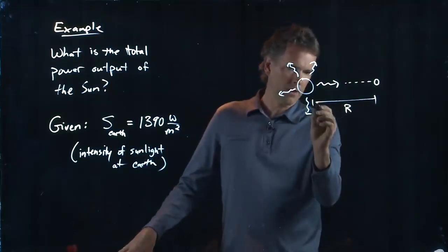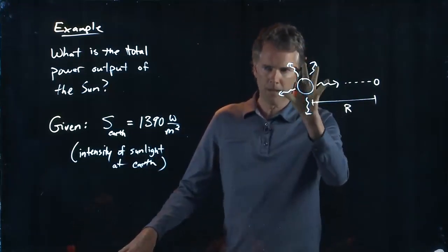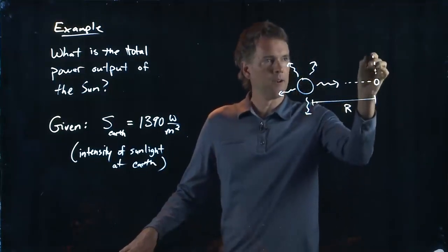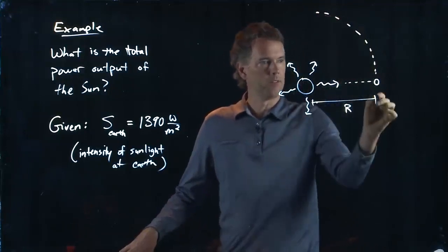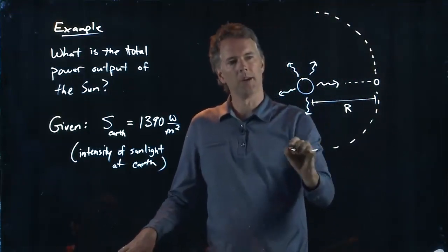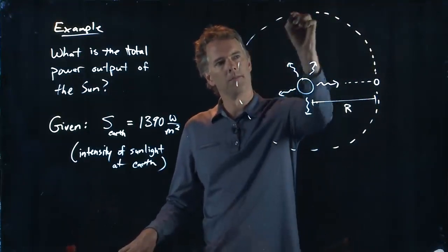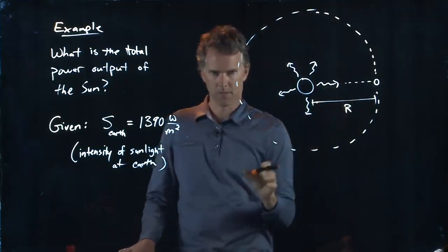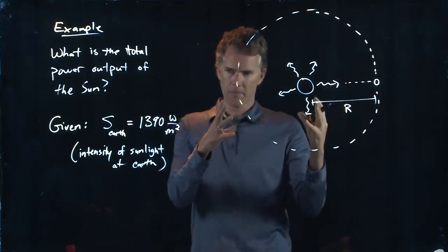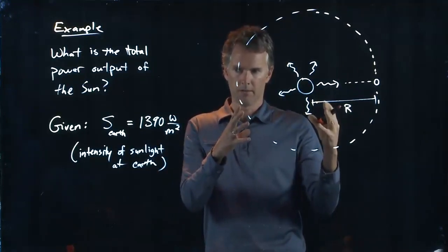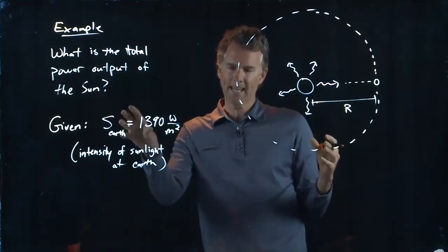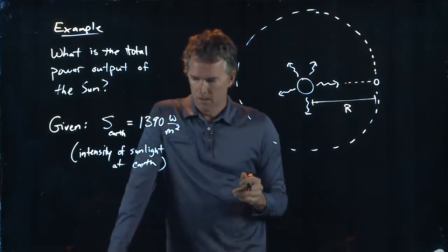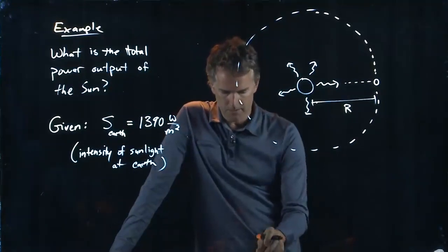So if I want to think about how much power is emitted by the sun in total, I have to worry about this sphere right here of radius capital R. The total power emitted through that sphere is, hopefully, something we can calculate based on the intensity at the Earth. How do we do it?